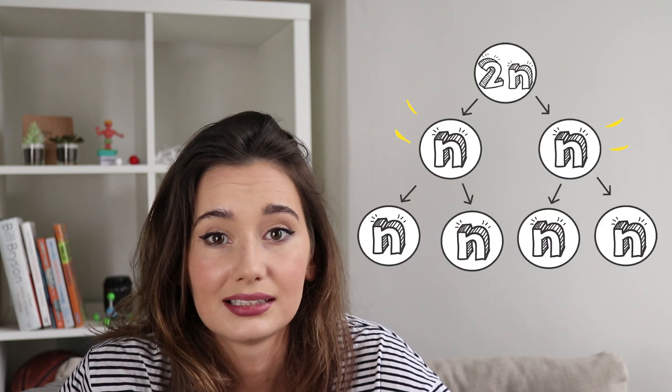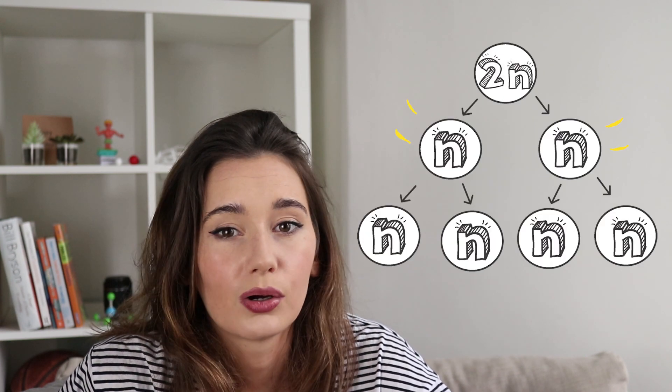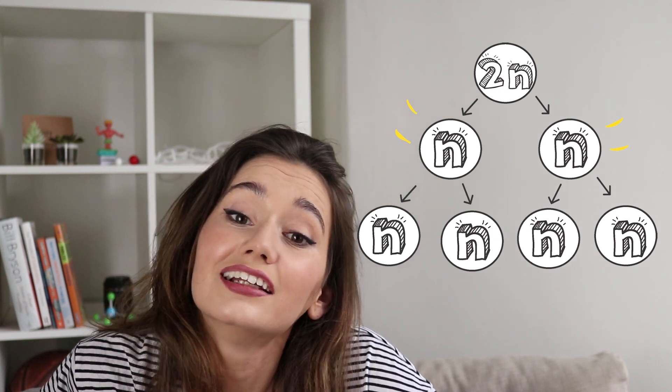Then we have anaphase II, where the centromeres of the chromosomes are cleaved and sister chromatids are segregated to opposing sides of the dividing cell. Lastly, we have telophase II: the spindle dissolves, nuclear envelopes form, chromosomes uncoil, and cytokinesis occurs. And four haploid cells now stand where once there was one single diploid cell.